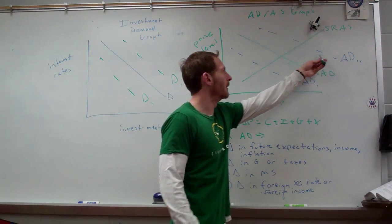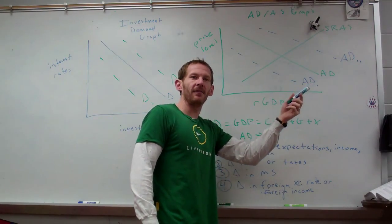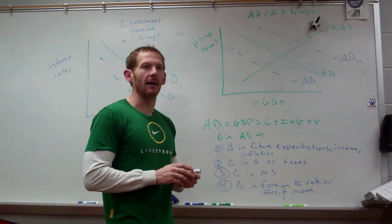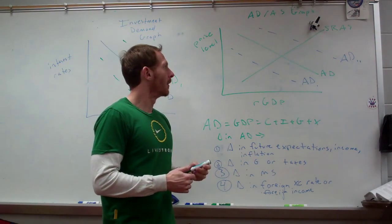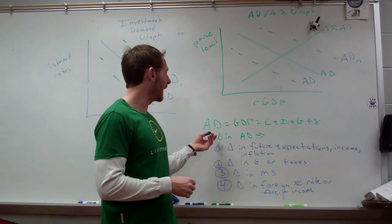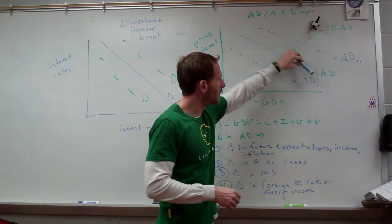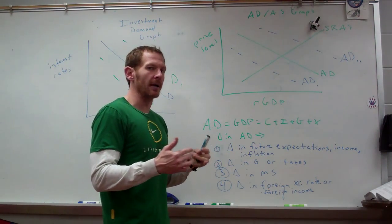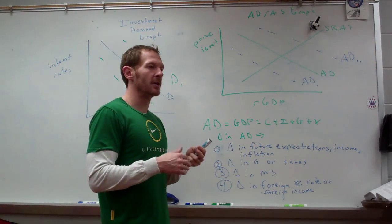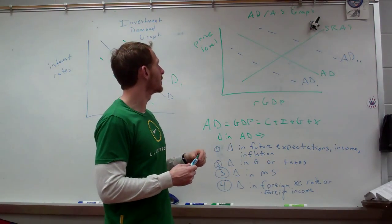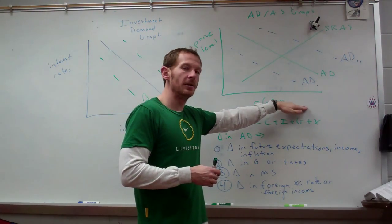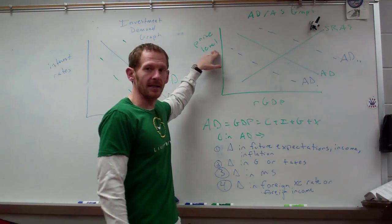So AD is essentially a function of the curve on the Keynesian graph. So when the AD curve moves, the curve on the Keynesian graph would move at the same time. So they're analogous in that regard. And AD is going to be downward sloping. It's not going to be all the demand curves in America combined. What it is, it's the relationship.